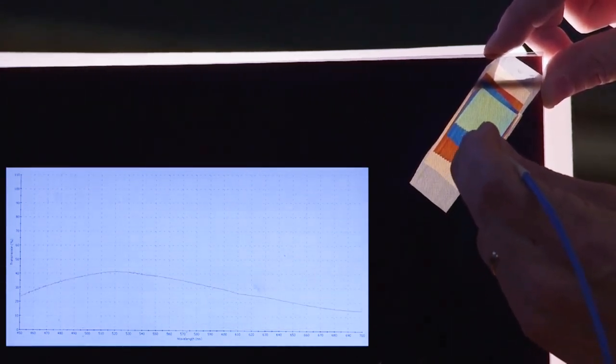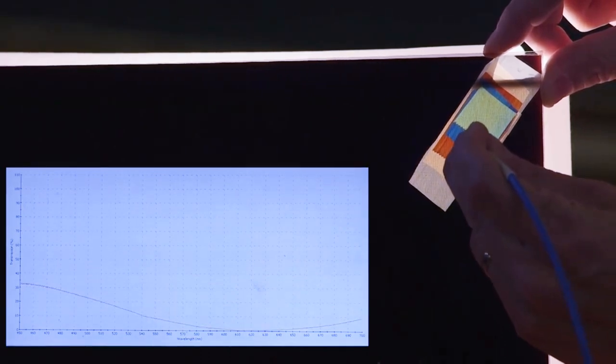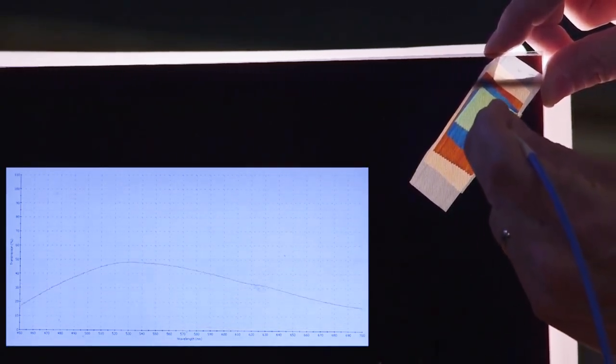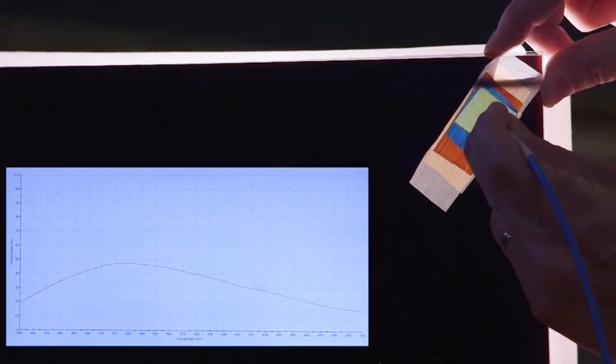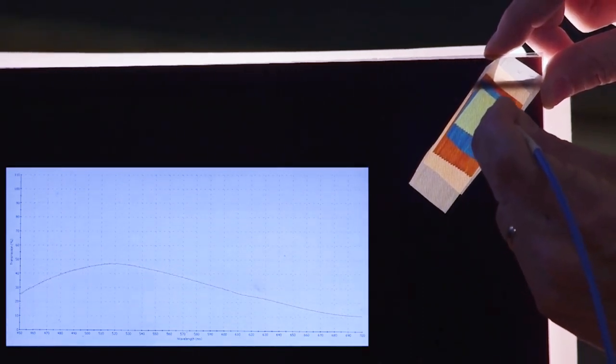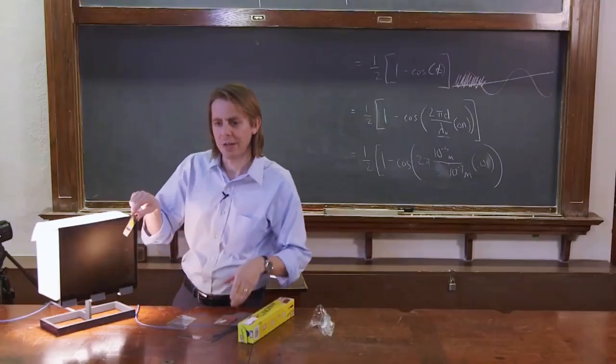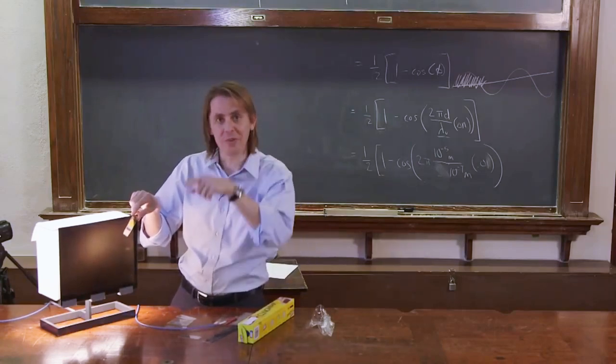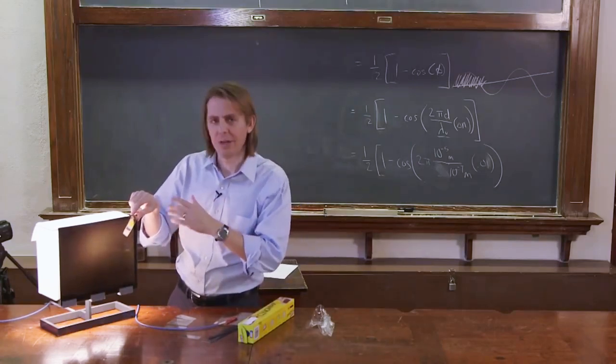And go to four layers. Oh, the curve changed quite a bit. And now you can start to see kind of the sinusoidal character of the curve. And five layers, and more kind of sinusoidal look to the curve. So you'll notice in my calculation, it got very, quite a few oscillations in the visible. And here, it's going a lot slower.